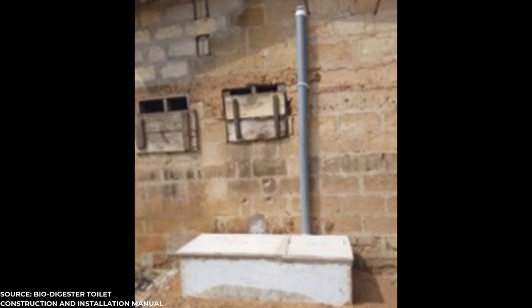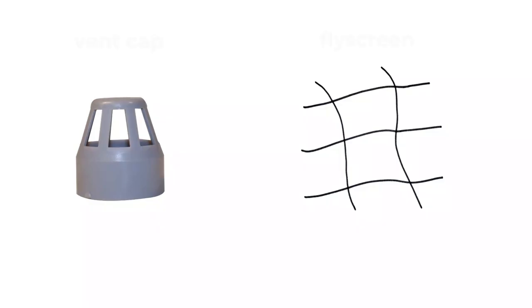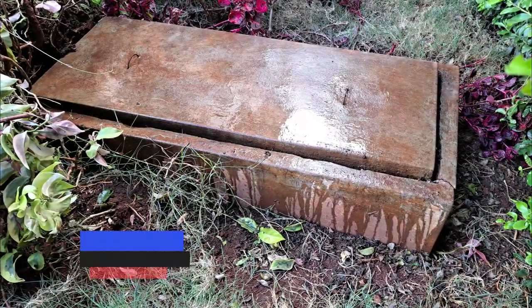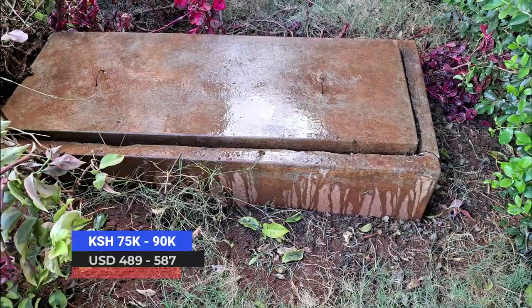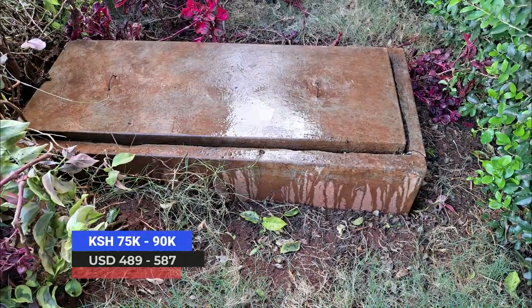The vent pipe should extend above your house's roof for proper ventilation. A cap and fly screen should be fitted to prevent house flies from entering and leaving your biodigester. The cost of a standard-sized biodigester varies from 75,000 to 90,000 Kenya shillings depending on location, ground conditions, and your biodigester installer.